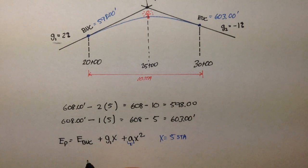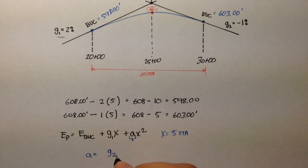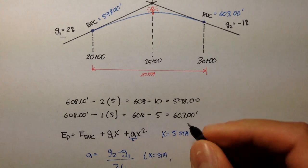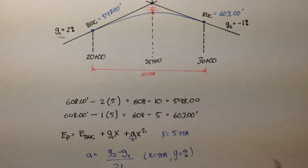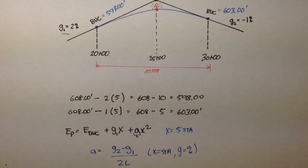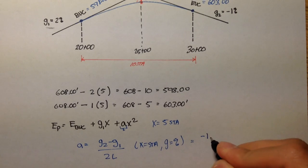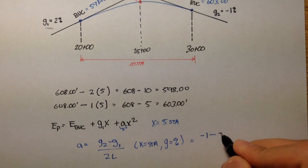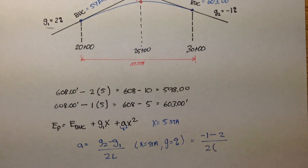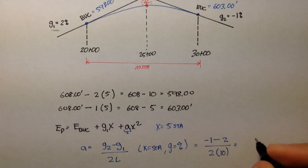I'm actually going to solve for the A term first, just so we can get that out of the way. The A term, remember from the last several videos was G2 minus G1 over 2L. Remember, if X is in stations, we want the grade to be in whatever percent form it is in currently. We don't want to convert the percent into decimal.